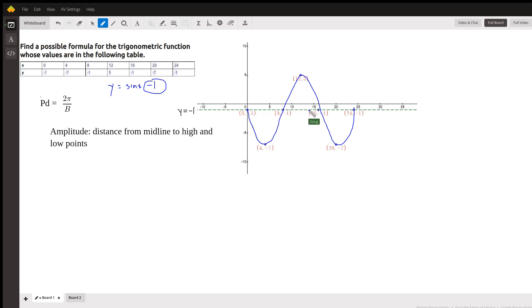And now, what's the period? Well, how long does it take to repeat? It looks like we go from zero to 16, and then the graph starts repeating itself. Okay, so that means that 2π over b has to equal 16.